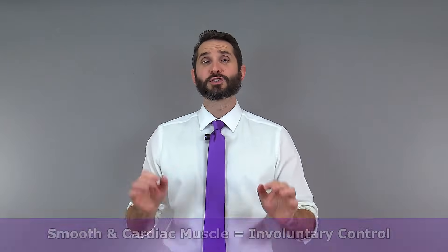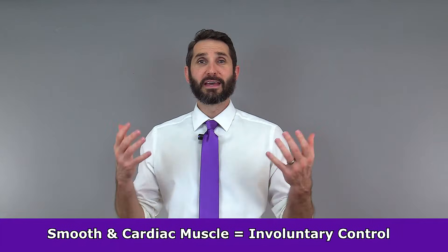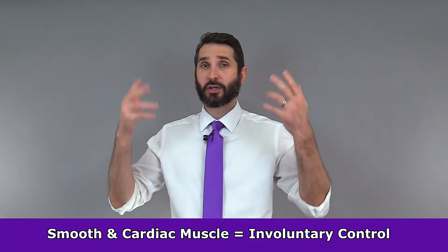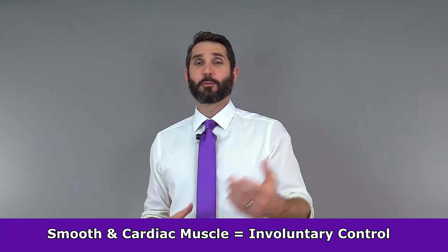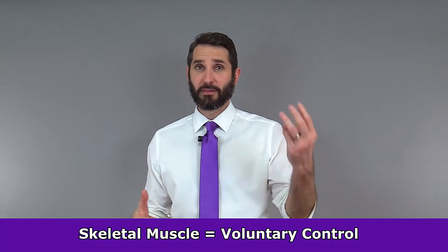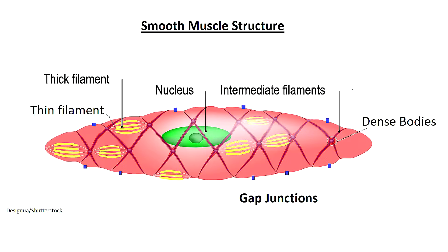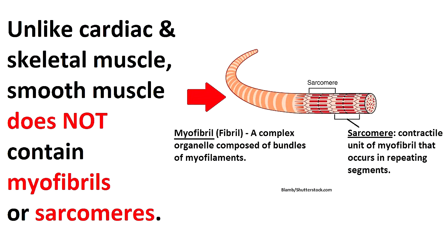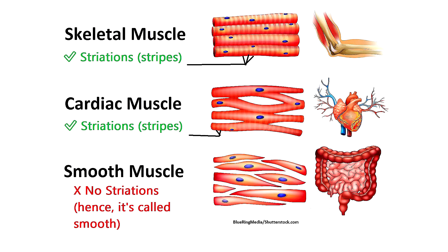Like cardiac muscle tissue, smooth muscle tissue is controlled involuntarily via the autonomic nervous system — you don't consciously control when your smooth muscle contracts. Remember, skeletal muscle is the only muscle tissue type that you can control voluntarily. Smooth muscle does not contain sarcomeres — the organized contractile units found in both cardiac and skeletal muscle — nor does it contain myofibrils. Because smooth muscle lacks both myofibrils and sarcomeres, it does not contain striations or the striped pattern that characterizes skeletal and cardiac muscle tissue.